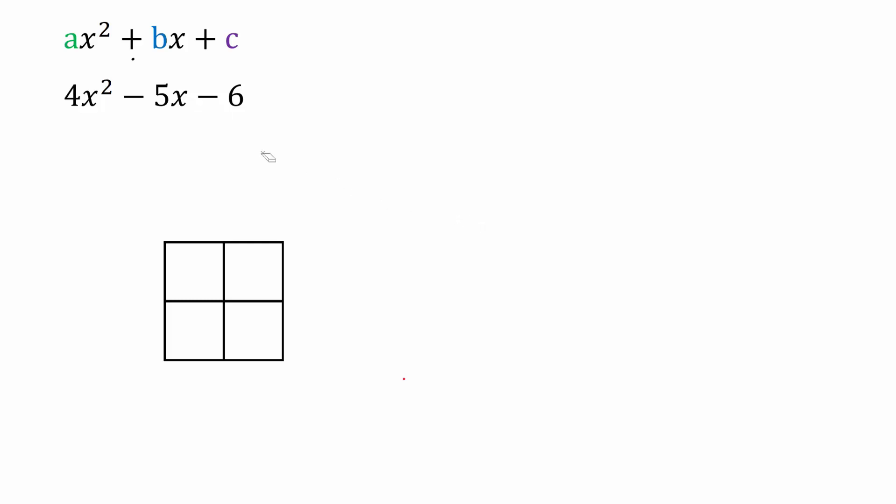In this video we are going to factor this trinomial and we're going to use the box method to do it. The first thing that we have to do is multiply our ax squared term by our c term. So I'm going to take 4x squared, multiply that by negative 6. That gives us negative 24x squared.